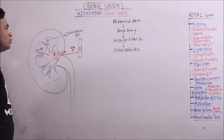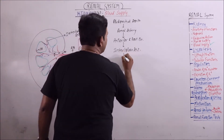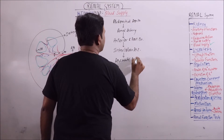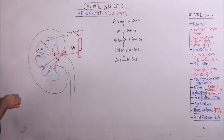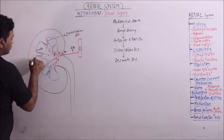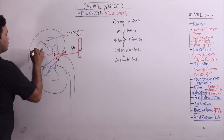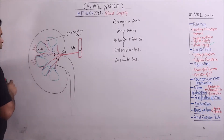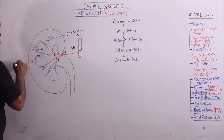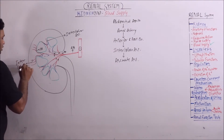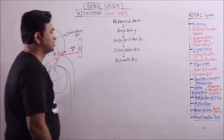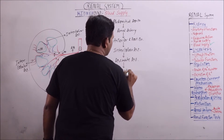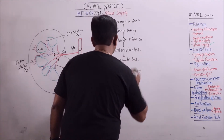So these are the arcuate arteries. Interlobar arteries give rise to arcuate arteries. These arcuate arteries in turn give rise to many interlobular arteries.